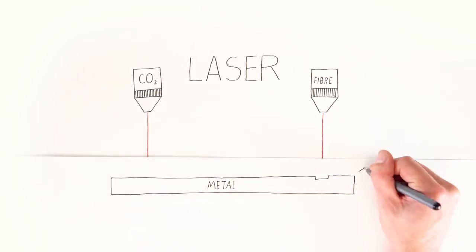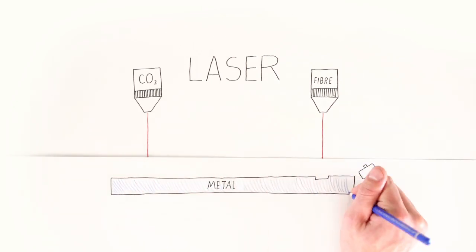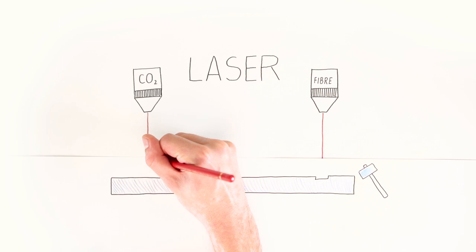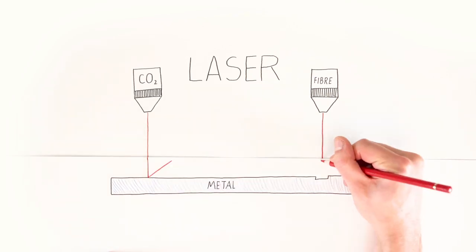If the glass is exchanged by shiny metal, the CO2 laser is reflected. However, with the fiber laser the metal reacts and it is engraved.